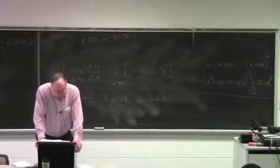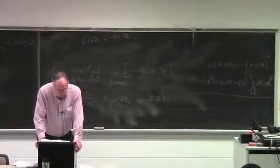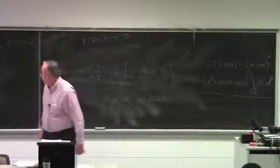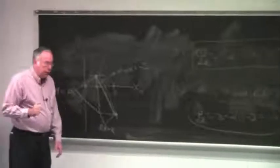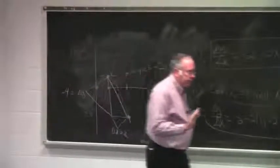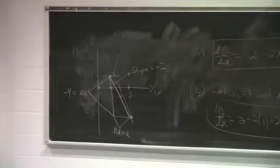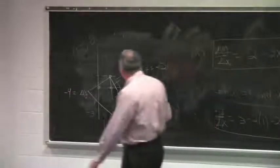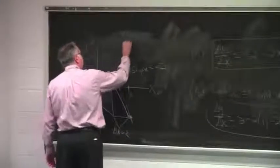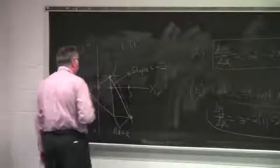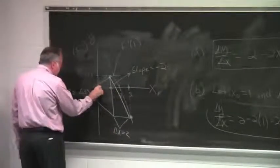Alright. Evaluate f prime of zero and illustrate it in your sketch. Well, we really have already done that. That f prime of zero is the point slope. Oh, excuse me. Take it back. We haven't done that yet. F prime of zero is the slope at x equals zero. What I was showing you here is f prime of one. F prime of one is this slope right here. F prime of zero would be this.